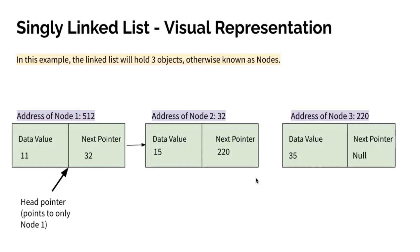And then lastly, we can link the singly linked list all together and piece it together into one linked list. So the output when displayed will be 11, 15, 35, which are the data values of each node.